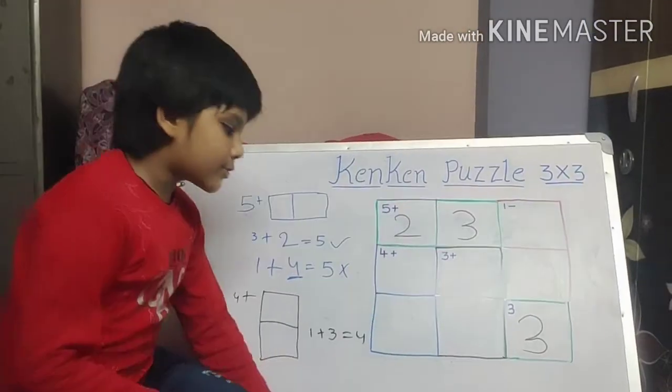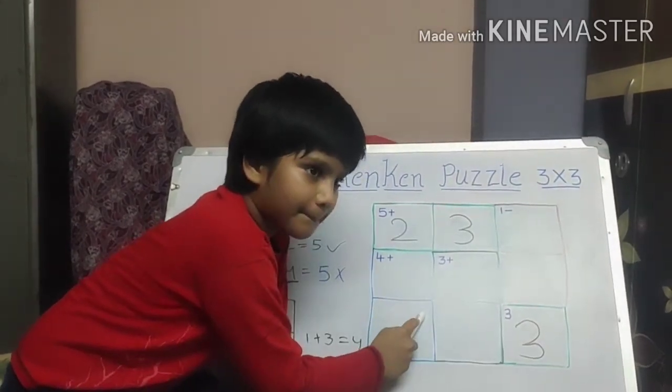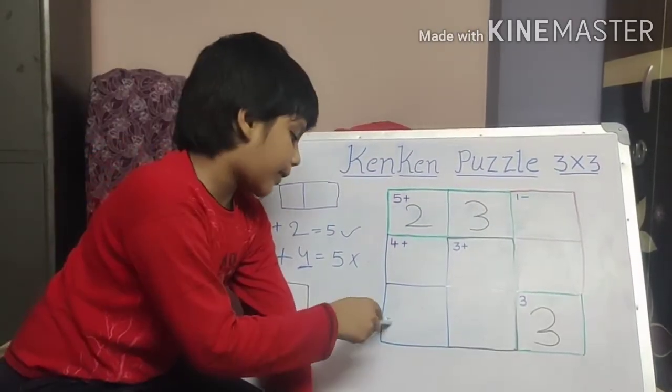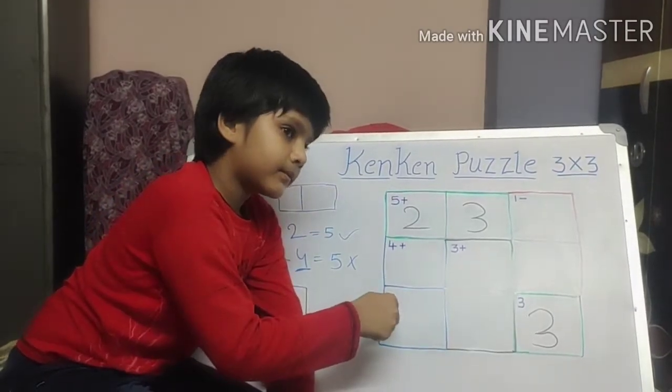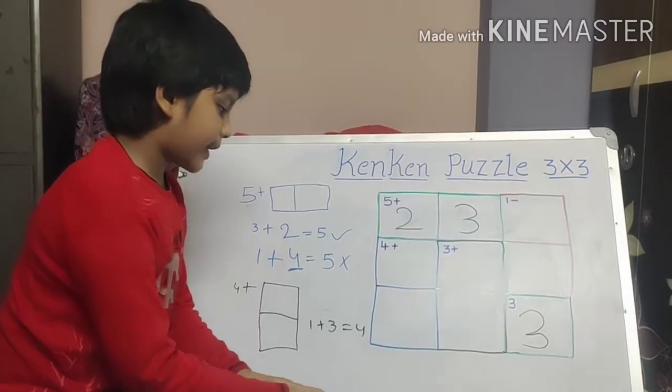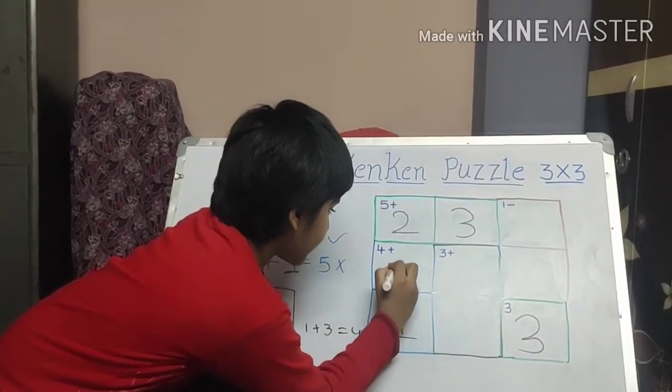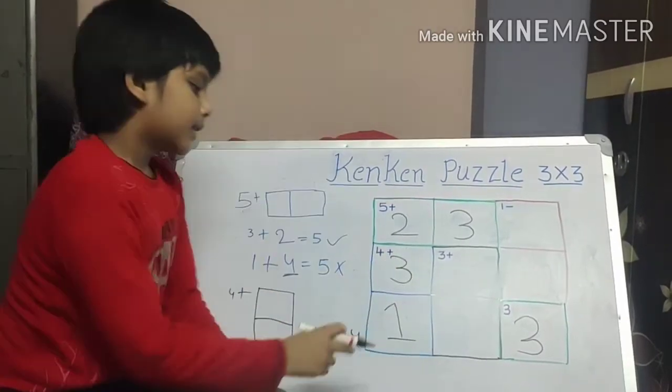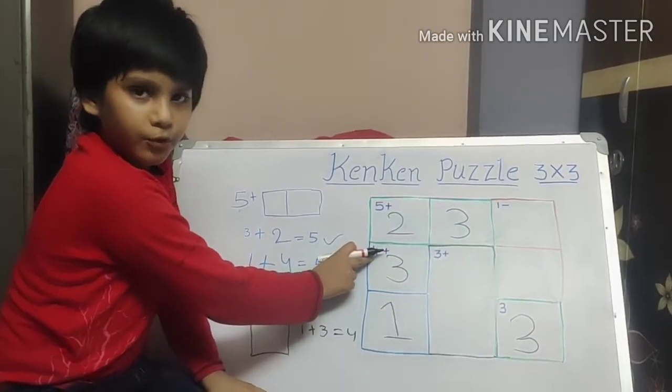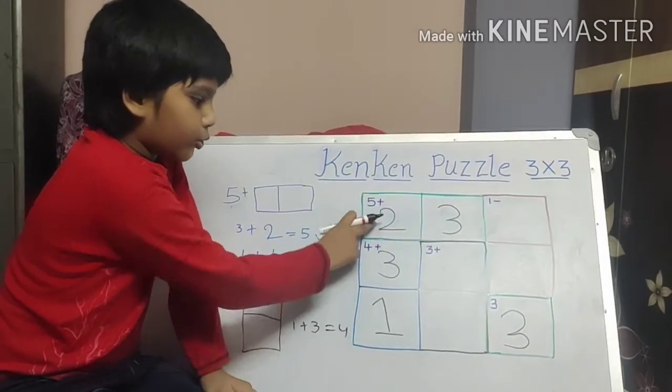...we should not take here three. Either one or two. If you take here one and here three, three plus one is equal to four. See, there is a sequence. One, two, three.